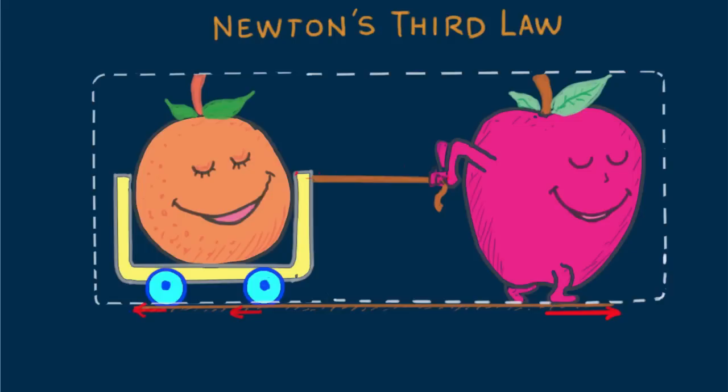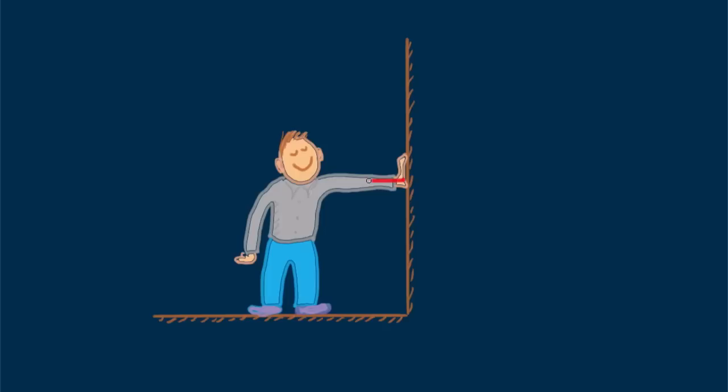So we see that forces always come in pairs. The force exerted on one object always comes from interaction with another object. You push on a wall, and the wall pushes on you.